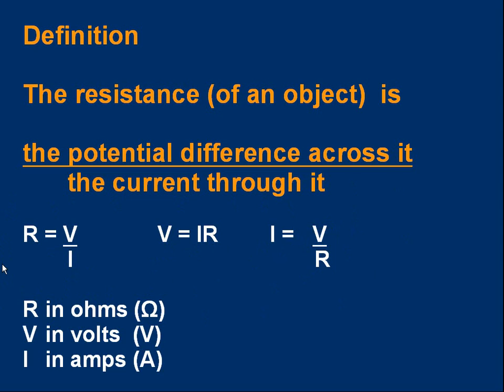To use the formula, of course, you've got to have everything in the right units. R, the resistance, must be in ohms, symbol capital omega. V, voltage or potential difference, must be in volts, symbol capital V. And I, current, must be in amps, symbol capital A.